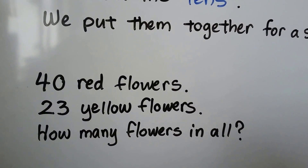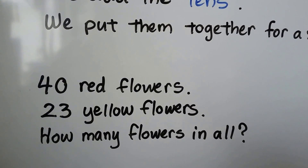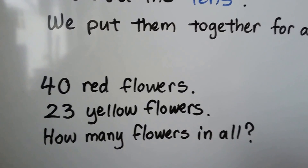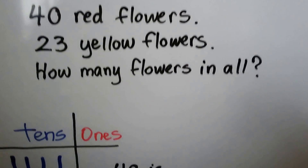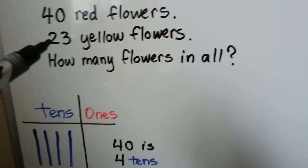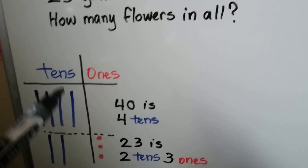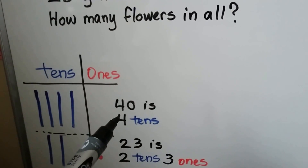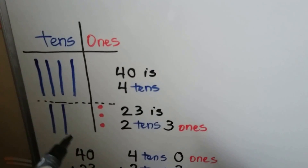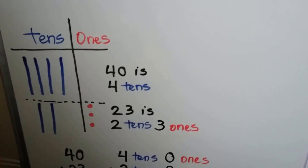There are 40 red flowers and 23 yellow flowers. How many flowers in all? We're adding a two-digit number to another two-digit number. We make 4 tens for the 40 red flowers, and we make 2 tens and 3 ones for the 23 yellow flowers.